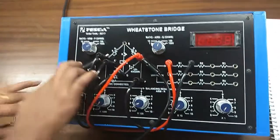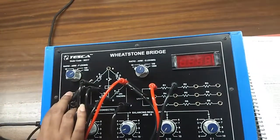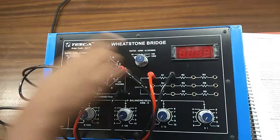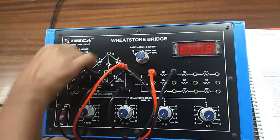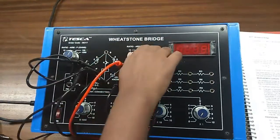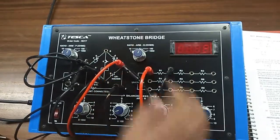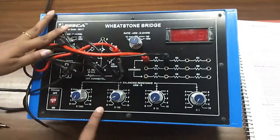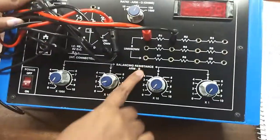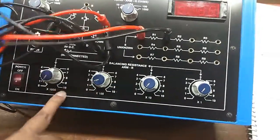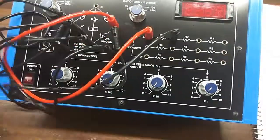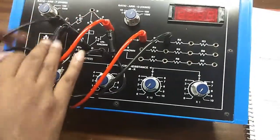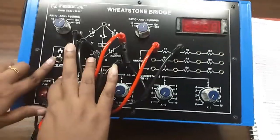Now, we will put the ratio arms P and Q at any appropriate value like this. And then, we will set this balancing resistance R to get null deflection in the galvanometer after pressing switch K1.